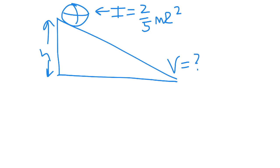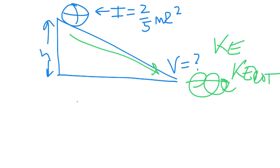The idea is that it starts with gravitational potential energy, and it's going to end up with kinetic energy. It's going to be moving at the bottom, so it has kinetic energy, and it's going to be rolling, so it's going to have rotational kinetic energy. So we're going to do ME₁ equals ME₂.